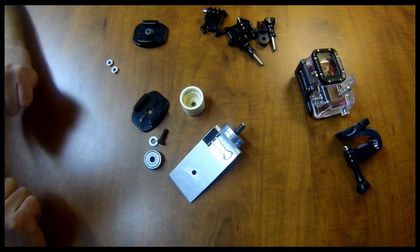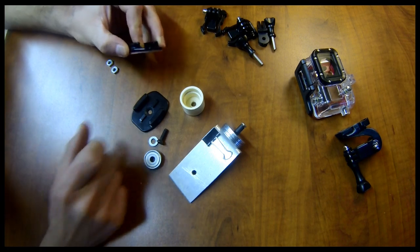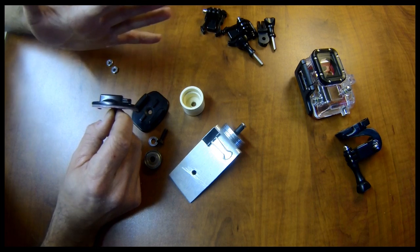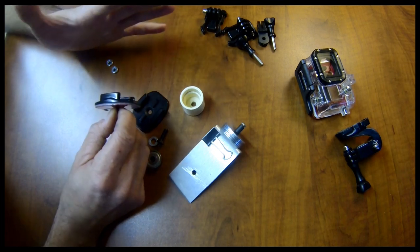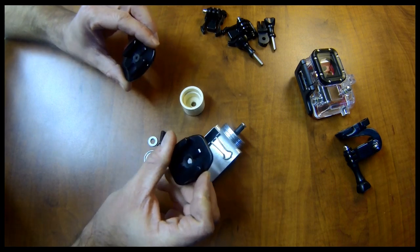The main part of the self-leveling rig is a swivel bearing mount. I wanted to be able to connect any of my mounts on one side of the swivel rig to the camera on the other side. So I used two flat adhesive mounts.